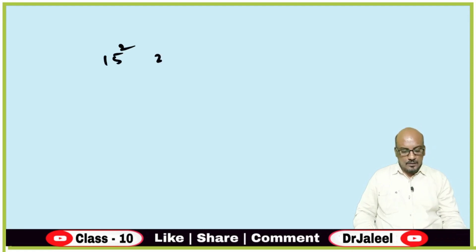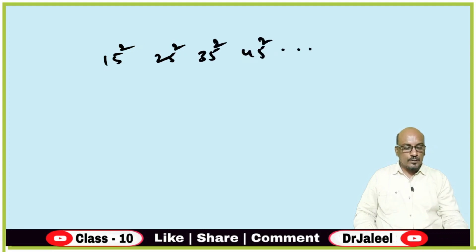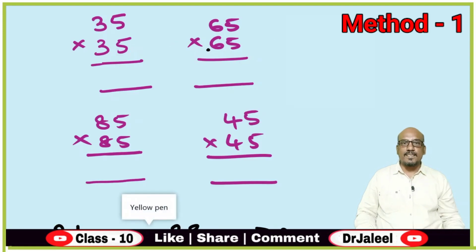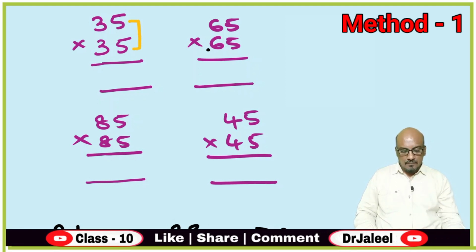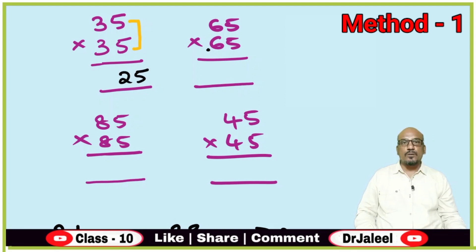Examples: 15 square, 25 square, 35 square, 45 square, and 295 square. Let us take the first example: 25 into 35. Here we will take the right side digits which are in the units place and directly multiply them. 5 into 5 is 25. Don't go for carry forward — directly copy it.